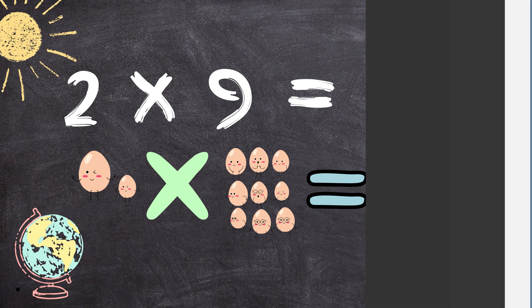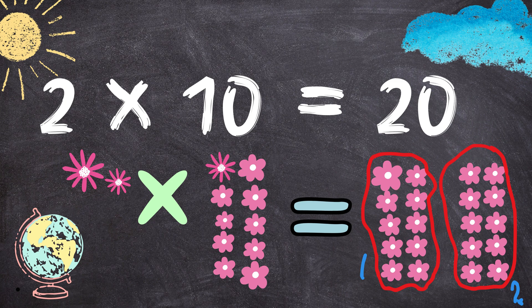Well done. Two times ten equals twenty. Two flowers multiplied by ten flowers will give you one, two, three, four, five, six, seven, eight, nine, ten, eleven, twelve, thirteen, fourteen, fifteen, sixteen, seventeen, eighteen, nineteen, twenty. Twenty flowers.